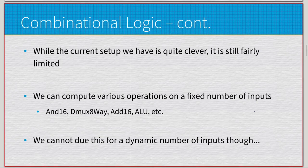So now while the setup that we have right now is fairly clever, it has some genuine drawbacks. We can compute various different types of operations on a fixed number of inputs. So And16 takes in two values and ANDs them together, Dmux8Way takes in one value and splits it out eight different ways, Add16 takes two values and adds them together, and ALU takes in two values and some function and does an operation. However, this exists kind of in a vacuum. We can't make a system out of this, at least not a very well functioning one, because we cannot do this for a dynamic number of inputs though.